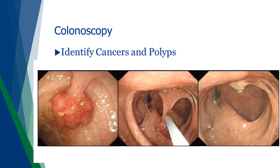On the left side of the screen is a polyp on a stalk. In the middle of the screen, a device called a snare has lassoed the bottom of the polyp right at the stalk. On the right side, you can see that we have completely transected — cut through — the stalk and removed the identified polyp.